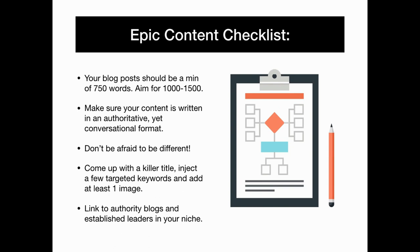Here is your epic content checklist: your blog post should be a minimum of 750 words — aim for 1,000 to 1,500. Make sure your content is written in an authoritative yet conversational format. Don't be afraid to be different. Come up with a killer title, inject a few targeted keywords, add in at least one image, and link to authority blogs and established leaders in your niche.